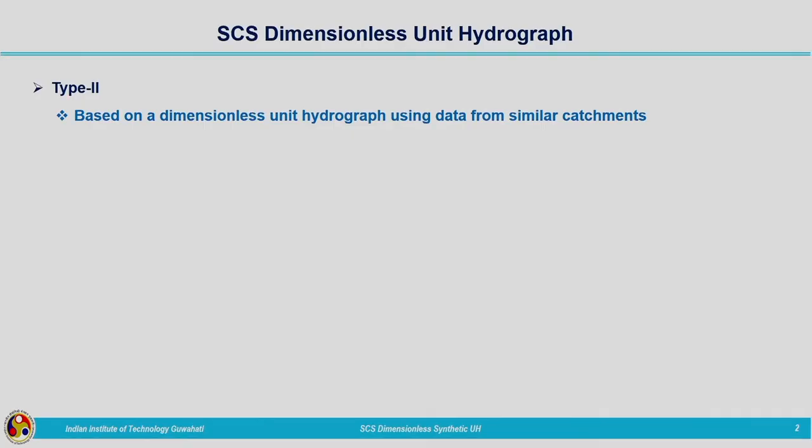Here we are going to discuss the SCS dimensionless synthetic unit hydrograph. This comes under category 2, which is based on a dimensionless unit hydrograph using data from similar catchments. This method was developed in the US, where different unit hydrographs from different catchments were averaged, and based on that a dimensionless unit hydrograph is derived. The corresponding data is given in all textbooks explaining this topic.